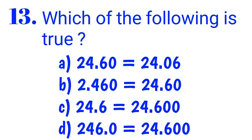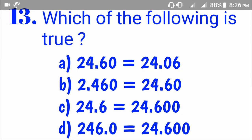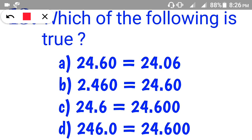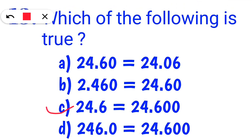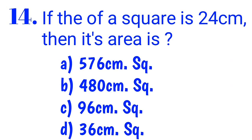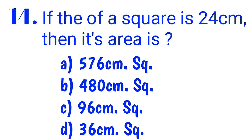Number 13: What is the following answer that is true? The correct answer is correct. If the side of a square is 24 cm, then its area is correct.